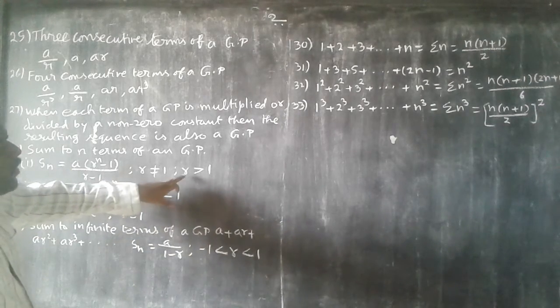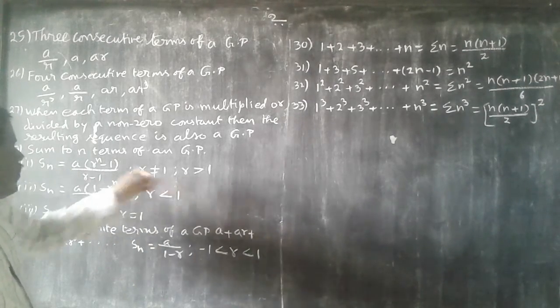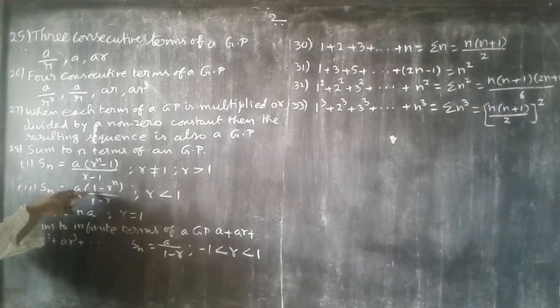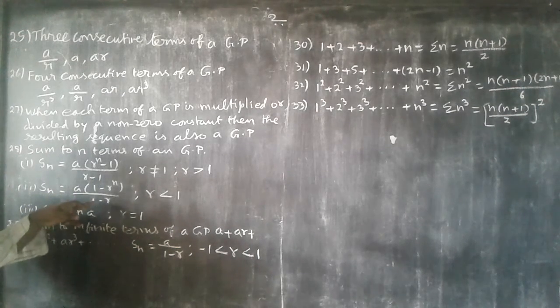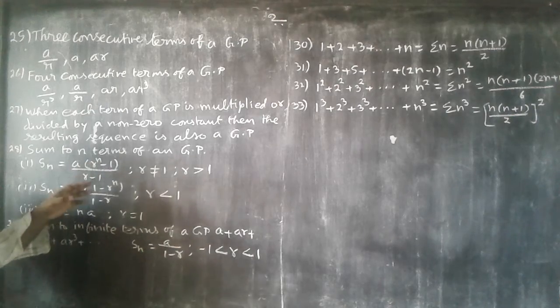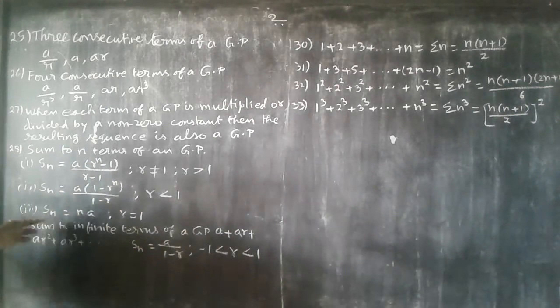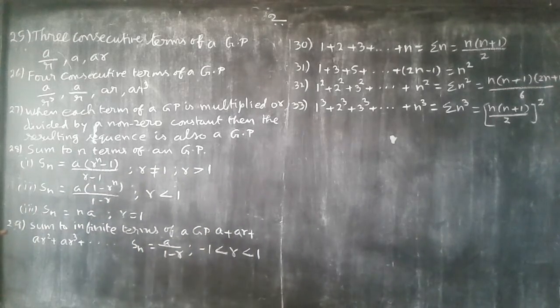The second formula: S sub n is equal to A into 1 minus R to the power n by 1 minus R.